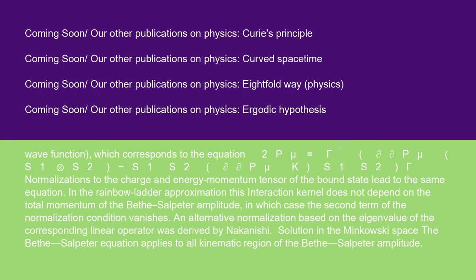Which corresponds to the equation 2Pmu equals gamma del/del Pmu S1 circle times S2 minus S1S2 del/del Pmu K S1S2 gamma. Normalizations to the charge and energy momentum tensor of the bound state lead to the same equation.